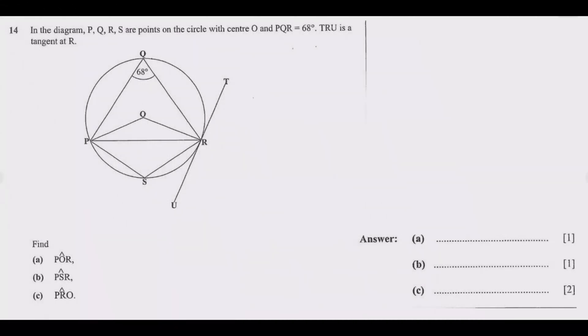Let us look at question E14. In the diagram, P, Q, R, S are points on the circle with center O, and angle PQR equals 68 degrees. TRU is a tangent at TR. Find: (a) angle POR, (b) angle PSR, (c) angle PRO.